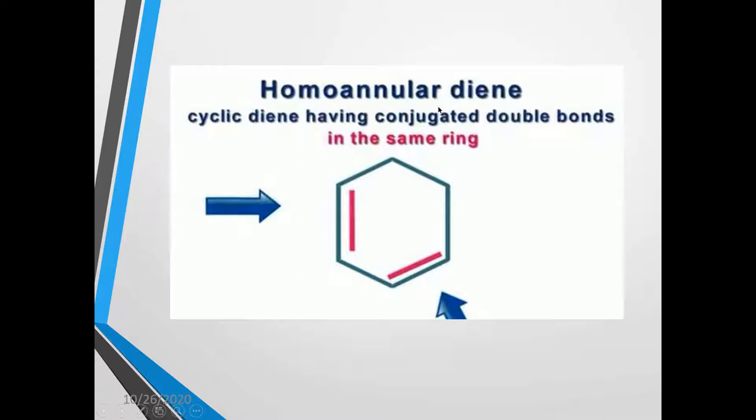Homoannular diene means if the diene system is present inside the ring and it is a part of the ring structure. You can see here — this is a double bond, here is a single bond, and this is a double bond. If you consider these 4 carbon atoms in the ring, it constitutes a parent diene structure, and since it is inside the ring, it is called as homoannular diene.